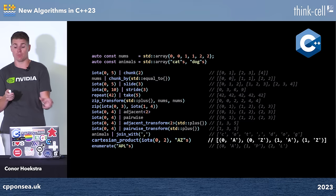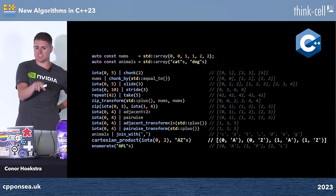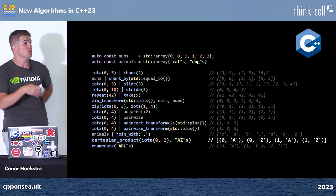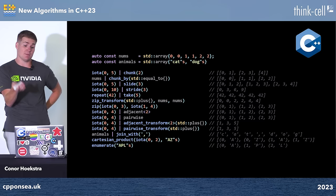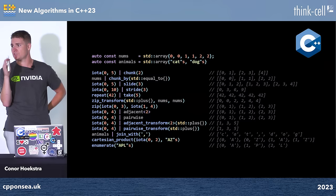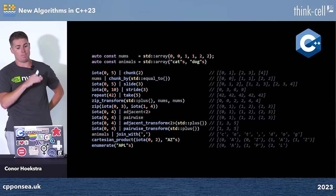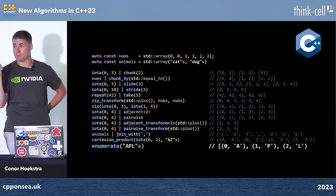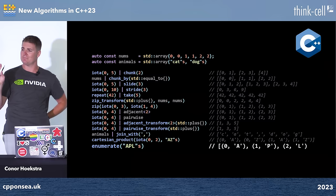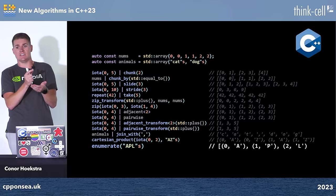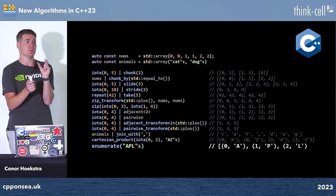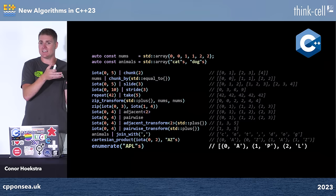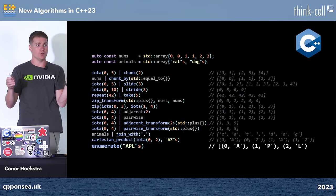'enumerate' was the last range adapter to get into C++23 — added at the very last minute. It exists in Python under the same name. I personally prefer 'zip_with_index' as a name, since it takes a sequence and turns each element into a tuple of (index, value). This is extremely useful when you're iterating through a range with a range-based for loop but also need the index — with enumerate and structured bindings, you don't need to fall back to an index-based loop.